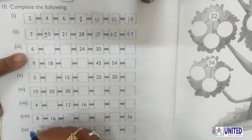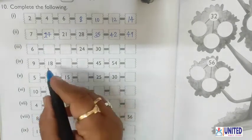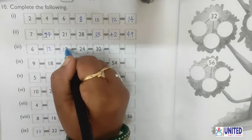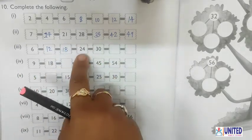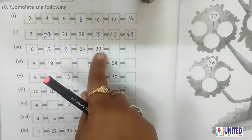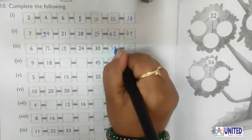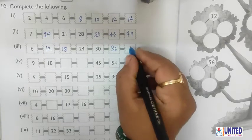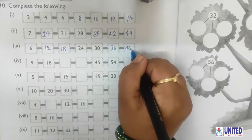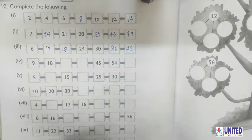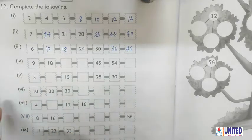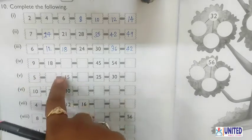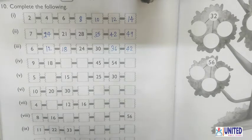Next is 6. You can write: 6×1=6, 6×2=12, 6×3=18, 6×4=24, 6×5=30, 6×6=36, 6×7=42. Now number 9 and number 5, and in this way you can complete this pattern.